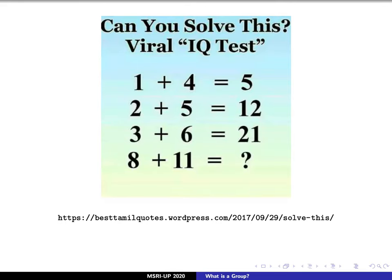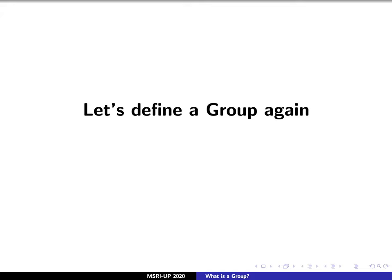You maybe have seen a meme on Facebook that kind of goes something like this. You have this operation, which you can see on the screen here, is plus. And you get back these funny answers that don't seem to correspond to regular addition. That's because the plus here is actually a different type of binary operation. It's actually not too hard to check that the binary operation that works in this case will be take in two numbers a and b and return a times b plus one. You can use this here to figure out what the last number would be, 8 circle 11.